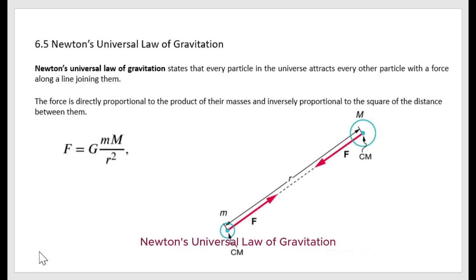Newton's Universal Law of Gravitation states that every particle in the universe attracts every other particle with a force along the line joining them. The force is directly proportional to the product of their masses and inversely proportional to the square of the distance between them.